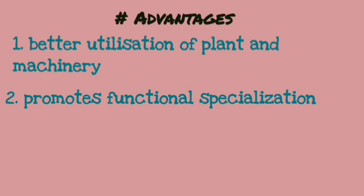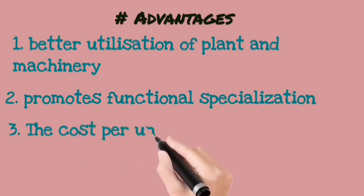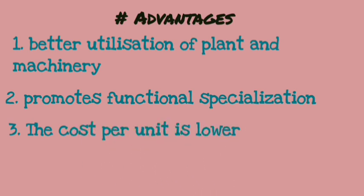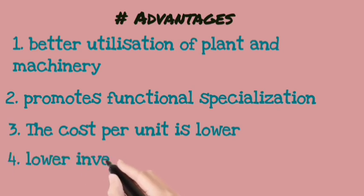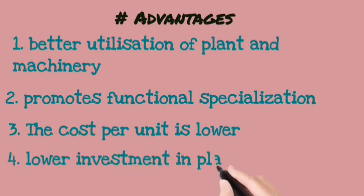Third, the cost per unit is very low. Cost per unit is the total production cost divided by the number of units produced. Fourth, the investment in plant and machinery is very low as compared to other production systems.